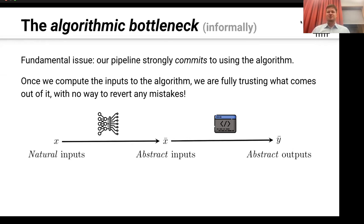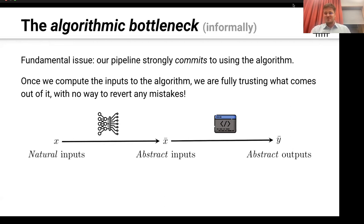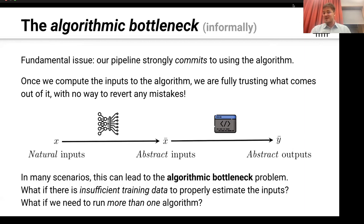We will curate all references mentioned during this talk on our tutorial website, so don't worry if you don't catch all of them. However, there is a more fundamental issue we call the algorithmic bottleneck. With this pipeline you start with very rich raw natural data, run your encoder to get algorithmic inputs, and at that point you're fully committing to whatever the algorithm gives you as output. Once you compute the algorithmic abstract inputs, you are fully trusting whatever comes out — there's no way to go back or revert any mistakes you might have made.